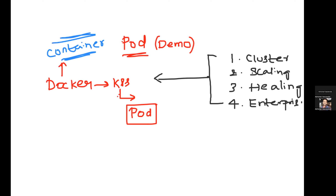That is the concept of containerization. But what Kubernetes says is: don't deploy your application as a container as-is — deploy it to me as a pod. So what is a pod and why should you deploy your container as a pod? Why can't you deploy directly as a container in Kubernetes? This is a fundamental question because once you start learning Kubernetes, the very first thing people talk about is pods.